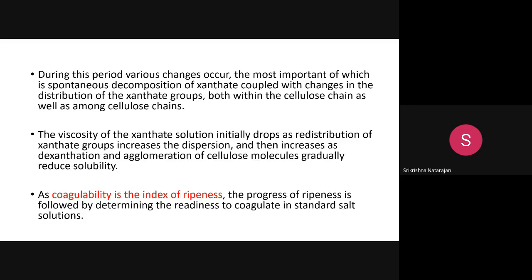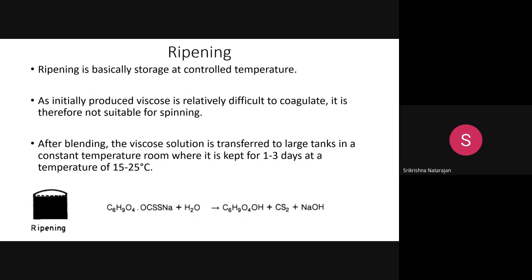Coagulability is the index of ripeness — it confirms the fluid has ripened and is ready for spinning. During ripening, xanthate groups decompose, viscosity drops, redistribution of xanthate groups occurs across the cellulosic network, de-xanthation takes place, and cellulose molecules agglomerate to reduce solubility. This is the critical stage confirming the viscose rayon fluid is ready for spinning.